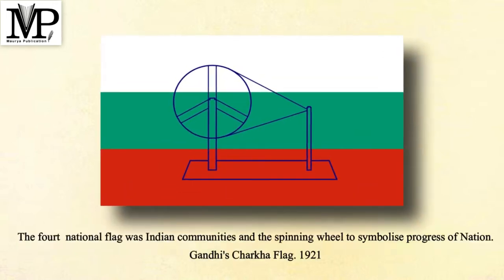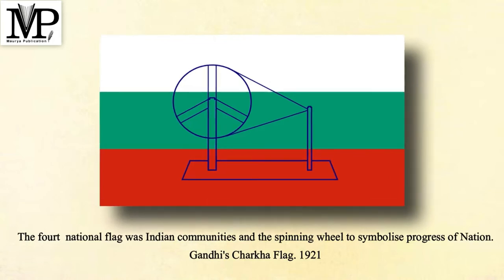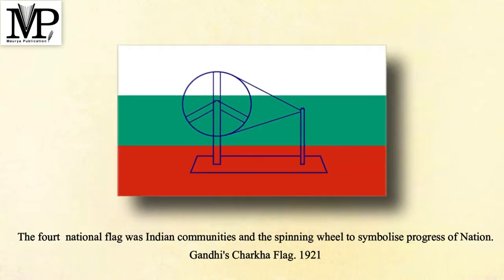The fourth national flag incorporated Indian communities and the spinning wheel to symbolize the progress of the nation. This was Gandhi's Charka Flag, 1921.